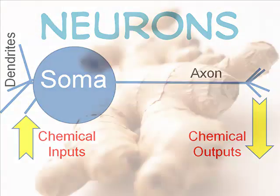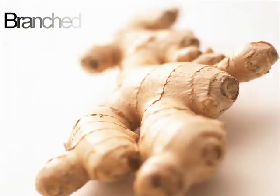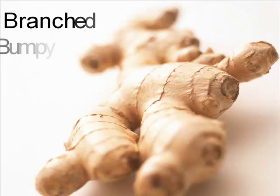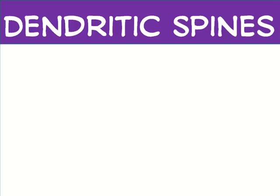The dendritic tree looks like raw ginger to me. It is branched, bumpy, and bulbous. The branches are close to the soma or come directly off it. They are bulbous rather than sharp and pointy. And a dendrite has a rough texture because it is covered with chemical receptors called dendritic spines.